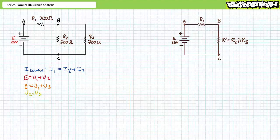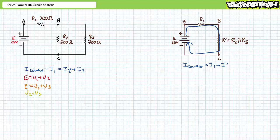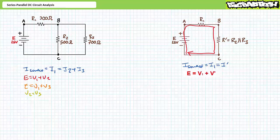Let's now take a close look at our pure series simplification. R1 is purely in series with R single prime. There is absolutely no need to simplify this any further. You will note the simplification still allows access to all the original nodes A, B, and C. Let's apply pure series properties to this simplification. Current through elements in series is the same: I source equals I1, which equals I single prime. Kirchhoff's voltage law: E equals V1 plus V single prime. It's now a simple matter of performing pure series circuit analysis of the simplified circuit, then mapping these properties back to our original series-parallel circuit.